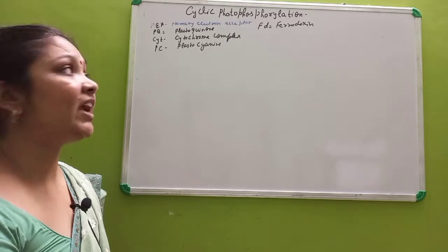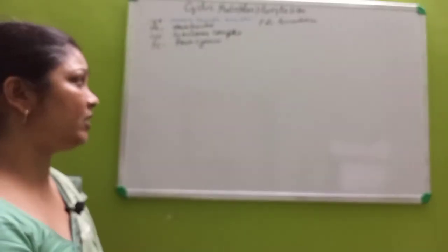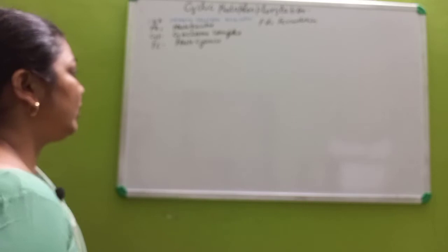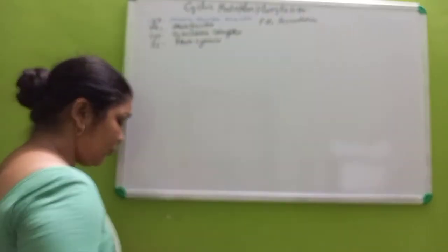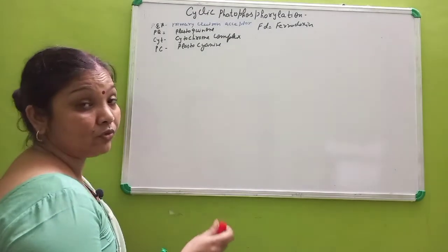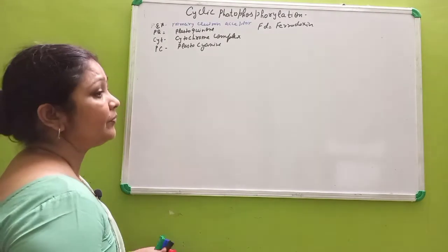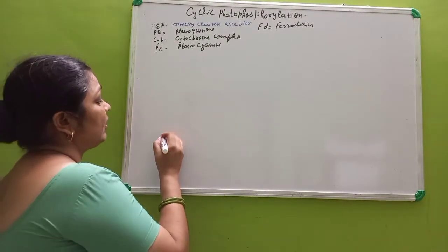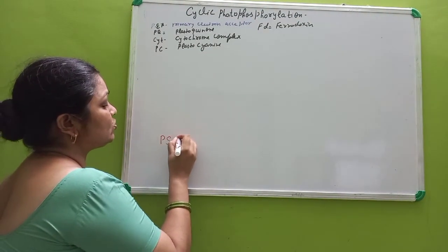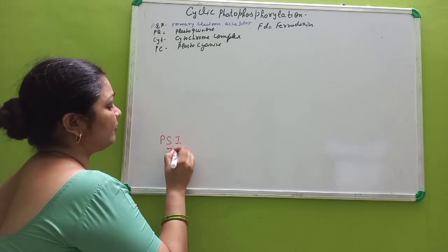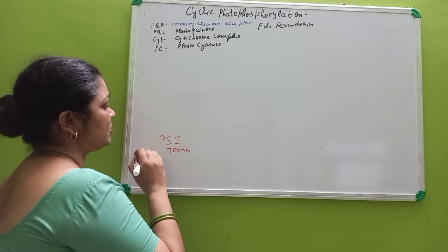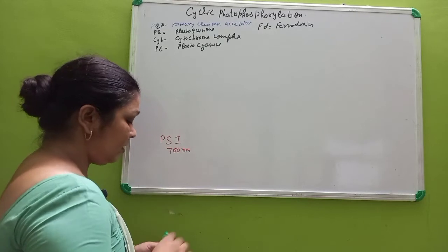Now children, we'll talk about cyclic photophosphorylation. For cyclic photophosphorylation, only one photosystem is required, and the photosystem that is required is PS1, which will absorb the wavelength of 700 nanometers.